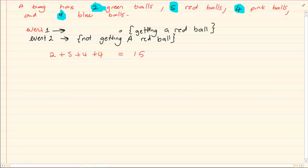So event 1 is getting a red ball. Now if I want the probability of event 1, then it means getting a red ball. What's a red ball? 5. Over how many do I have? 15. So the probability of getting a red ball is 5 over 15.